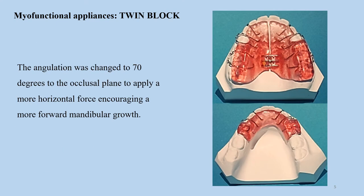The upper and lower blocks can be seen here. The lower mandibular molars are usually kept free, whereas the upper appliance has a screw and various retentive components. Usually the angulation between these two blocks is kept at 70 degrees to the occlusal plane, so as to apply a more horizontal force to encourage forward mandibular growth.